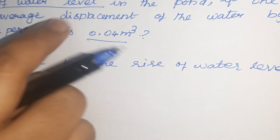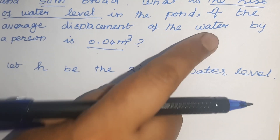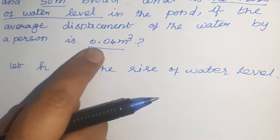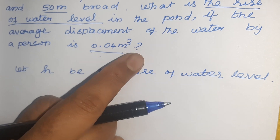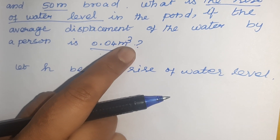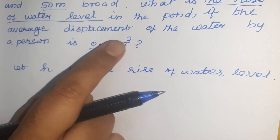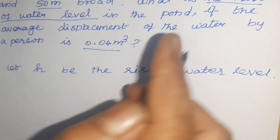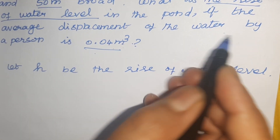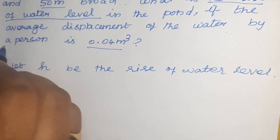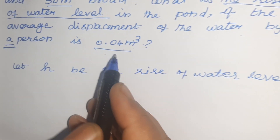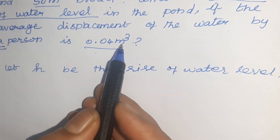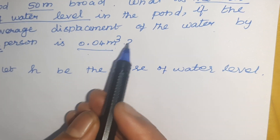If the average displacement of the water by a person is 0.04 meter cube, so the average displacement for one person is 0.04 meter cube.